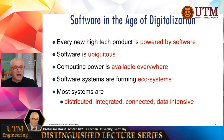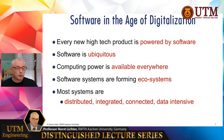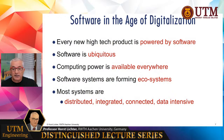Every new high-tech product is powered by software — software is ubiquitous because computing power is available in almost every device, making devices smarter. Software systems are no longer islands; they form ecosystems to deliver more value to clients and customers. These new software systems are very complex, usually distributed, integrated, connected, sometimes data-intensive, and built using heterogeneous technologies.